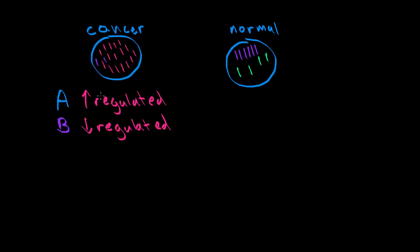If we want to look at a bunch of genes and immediately see which ones are up or downregulated in different cells, we use a technology known as a microarray. A microarray is basically a small chip that can be made out of silicon or glass.